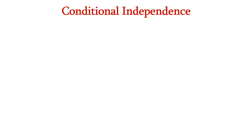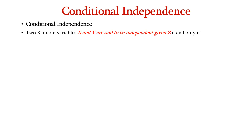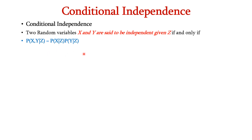Now let us see about conditional independence. Two random variables X and Y are said to be independent given Z if and only if P(X, Y given Z) can be expressed as P(X given Z) times P(Y given Z).